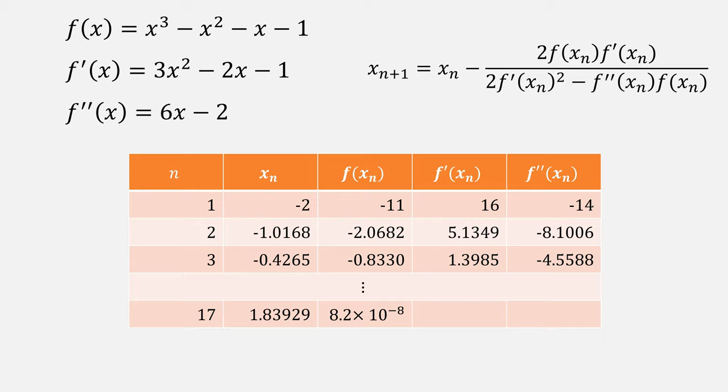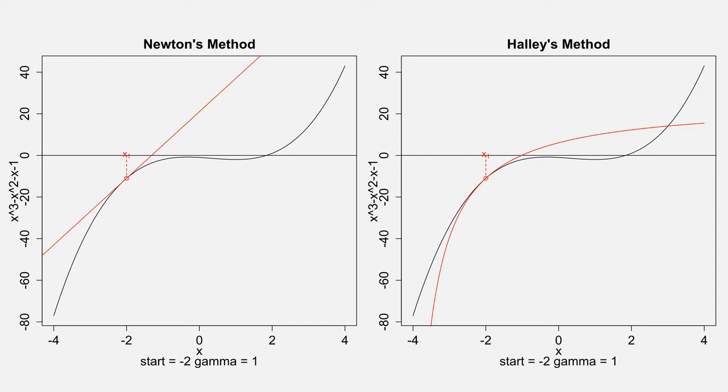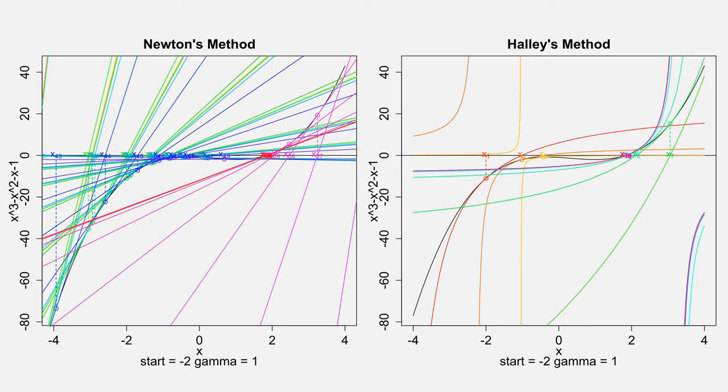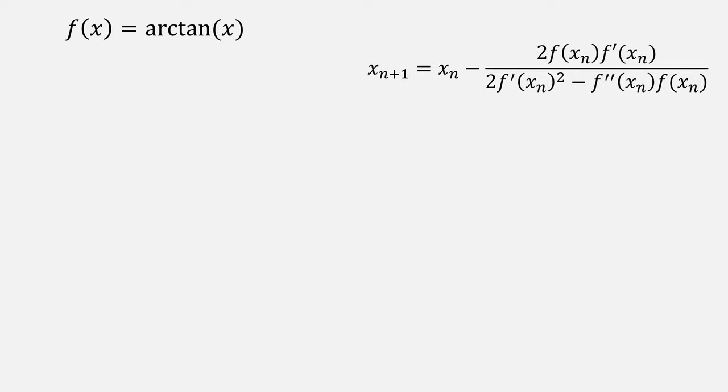Let's compare this to how Newton's method would behave starting from the same point. Here's one iteration of both methods. Then after about five iterations. And then after about 10, notice that Newton's method is actually doubling back on itself. In fact, Newton's method takes a very long time to converge.